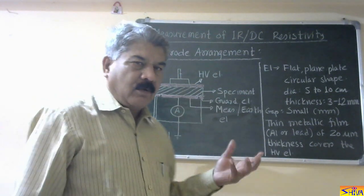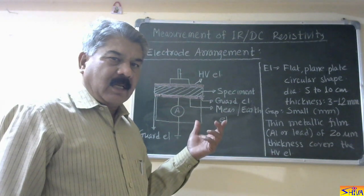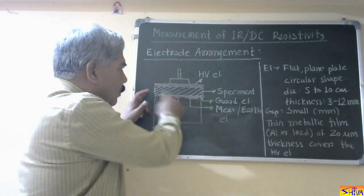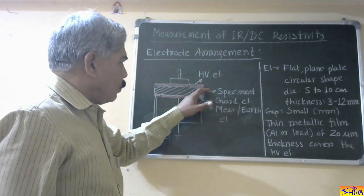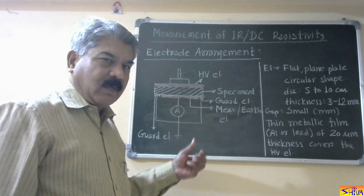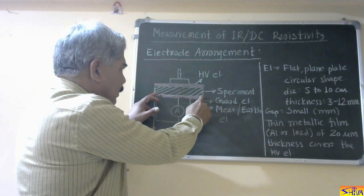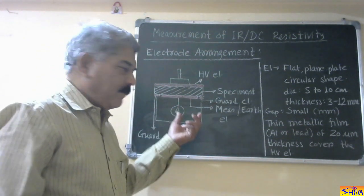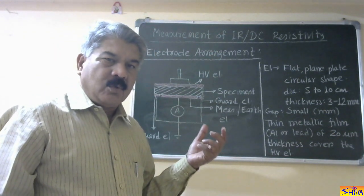Now, why do we require a three-electrode arrangement? Two-electrode arrangement will also serve the purpose, but three-electrode arrangement gives a more precise reading. The reason is we have to measure the current going through the insulation. When we use just two electrodes, current may flow over the edges of the specimen, causing error in reading. Therefore, we use the guard electrode so that whatever current is flowing over the edges is bypassed and not measured. Only the current flowing through the specimen is measured. Therefore, three-electrode arrangement is always better than two-electrode arrangement.